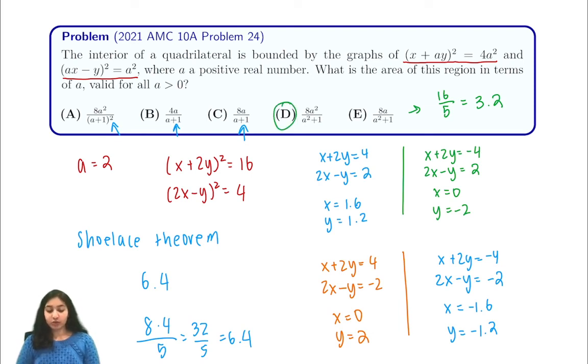So in this case, what you want to do is try small examples, and that is often the way to go. And we saw that with the small example, we were able to limit our answer choices down to D.